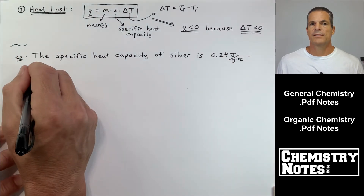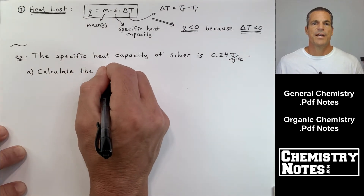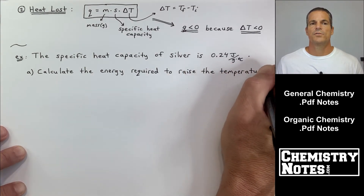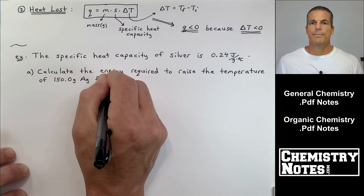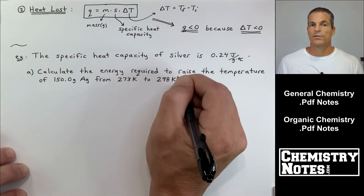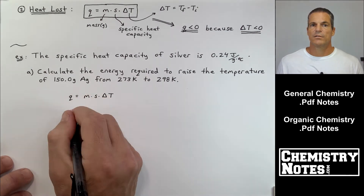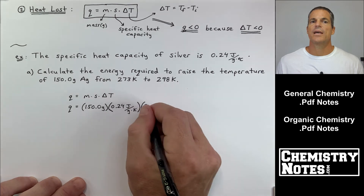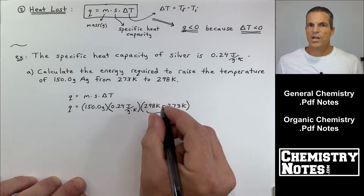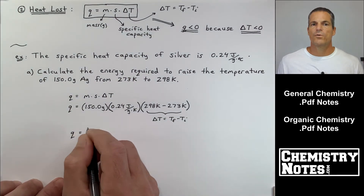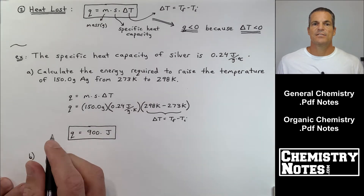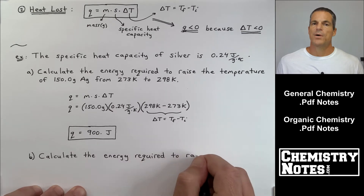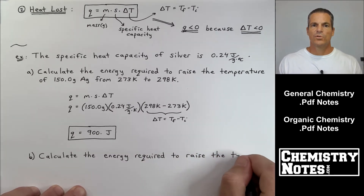Let's do an example. The specific heat capacity of silver is 0.24 joules per gram per Celsius. Part A: calculate the energy required to raise the temperature of 150.0 grams of silver from 273 K to 298 K. Since temperature is going up, heat is absorbed and q is positive. Using q = msΔT: q = 150.0 g × 0.24 J/g/K × (298 − 273) K = 900 joules. Heat is required; q = +900 J.